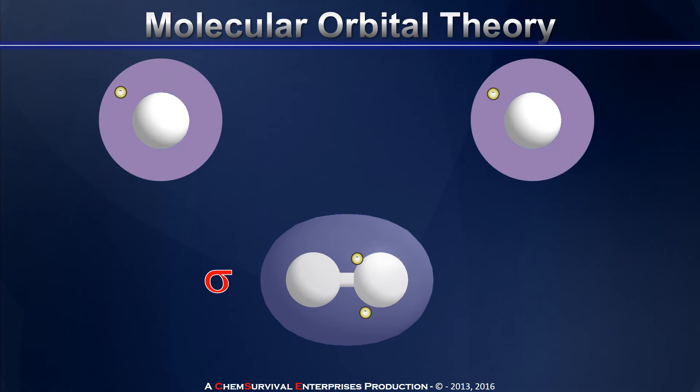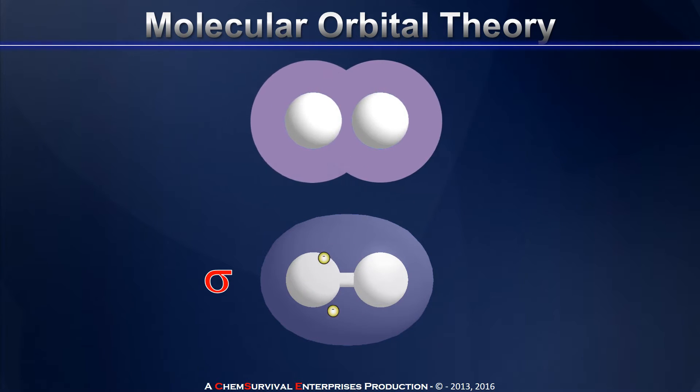That new molecular orbital that forms is called a sigma star molecular orbital. And it looks quite different from the sigma MO, doesn't it? If there were electrons inside of this sigma star molecular orbital, they would spend most of their time outside of the two nuclei, not screening their positive charge repulsions, and therefore would actually make the system very, very unstable.